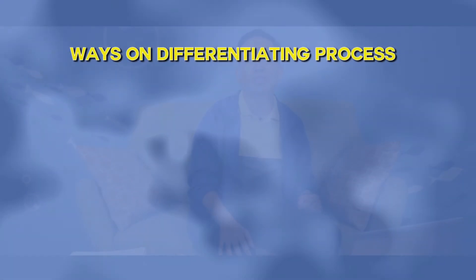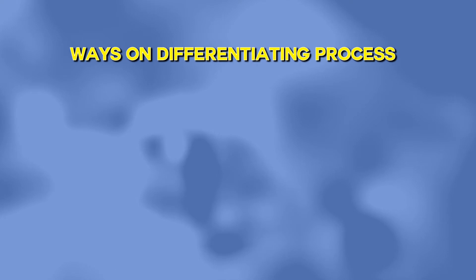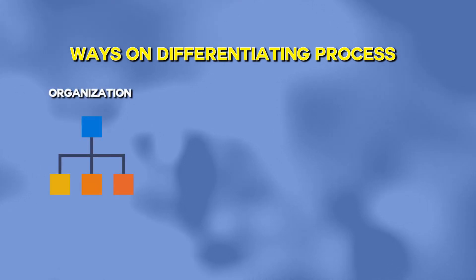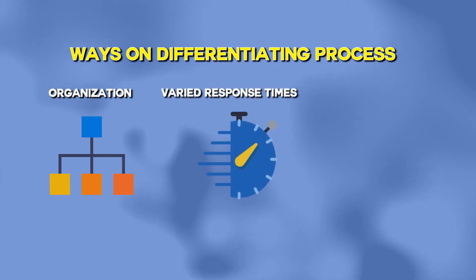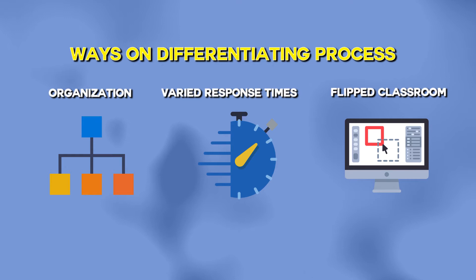We are going to examine ways on how we can differentiate process. There are different ways. The first one is differentiating process of organization. Another would be differentiating process for varied response time. And finally, this may be a new concept for some — using the flipped classroom. We'll cover more of the flipped classroom towards the end of this part.